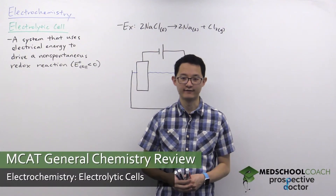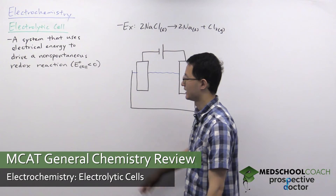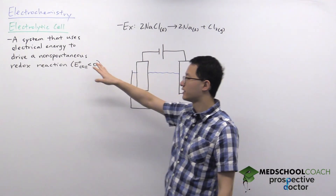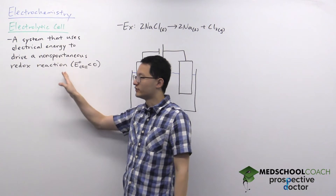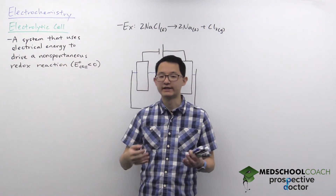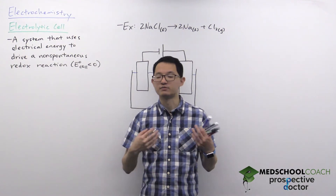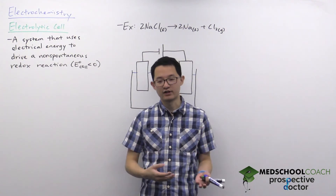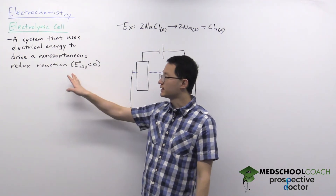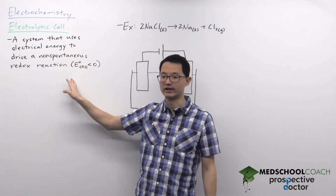In this video we're going to go over electrolytic cells. Electrolytic cells are systems that use electrical energy to drive non-spontaneous reactions. In many ways it's the opposite of a galvanic or voltaic cell. Galvanic cells use a spontaneous redox reaction to produce electrical energy, whereas electrolytic cells use electrical energy to produce chemical energy.